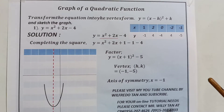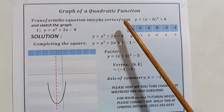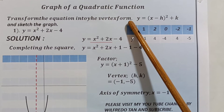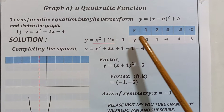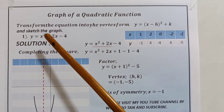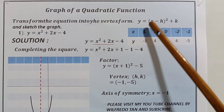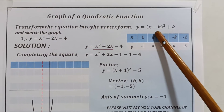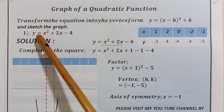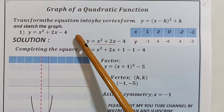We're going to discuss the equation of the parabola, particularly the vertex form. We have three problems today. The first one, we're asked to transform the equation into the vertex form, which is y is equal to x minus h, quantity squared, plus k. The given equation is y is equal to x squared plus 2x minus 4.